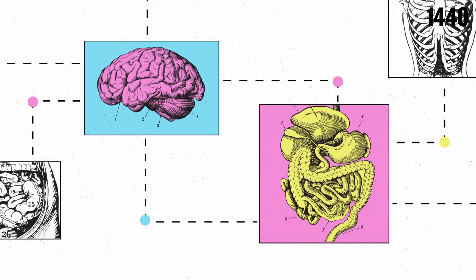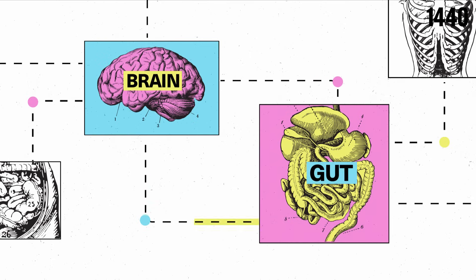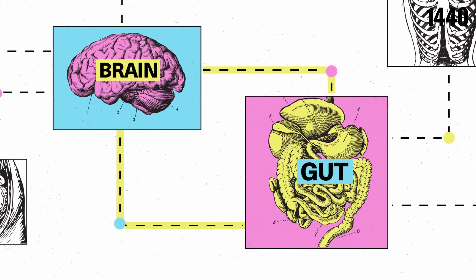Through a remarkable communication pathway known as the gut-brain axis, our gut microbes can talk directly to our brain, influencing our moods,